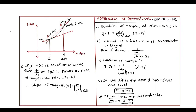Let's see how it works. If y is equal to f of x is the equation of the curve, then dy by dx, or f prime of x — the first derivative — is known as the slope of tangent at point (x1, y1).